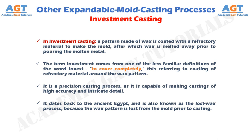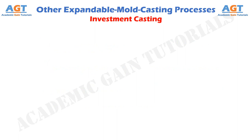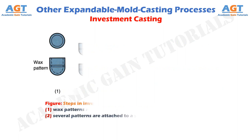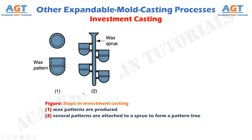We are going to observe the steps of investment casting, or lost wax casting process, in the next few figures. Figure 1 shows the first step in the investment casting process, where wax patterns are produced. Figure 2 shows the second step, where several patterns are attached to a sprue to form a pattern tree.